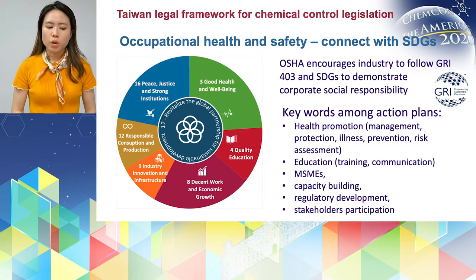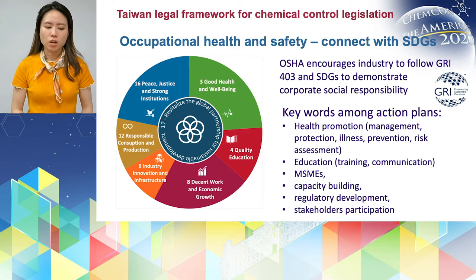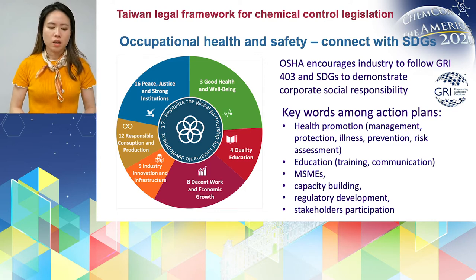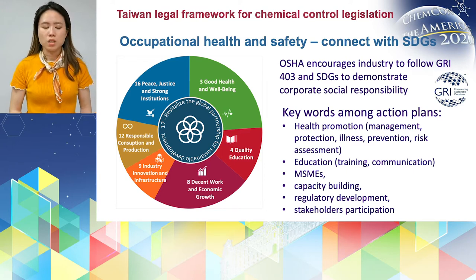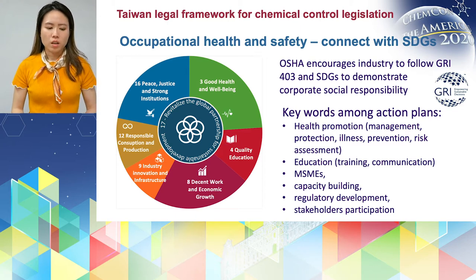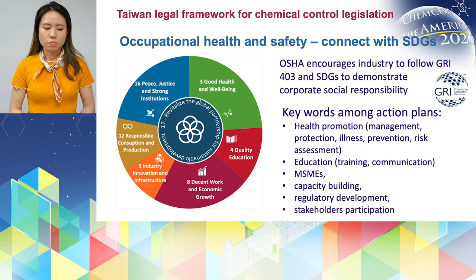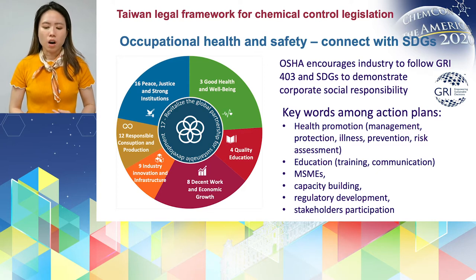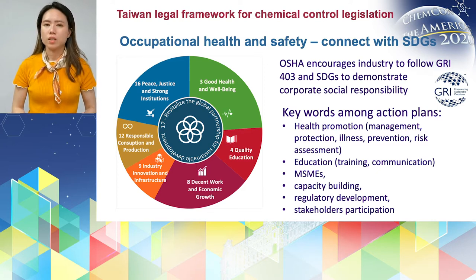Those keywords are: health promotion — including management, protection, illness prevention, and risk assessment; education — including training and communication; micro or small and medium enterprises, which is very specific because in Taiwan more than 98% of MSMEs compose our industry profile; capacity building, which is also very important for MSMEs; and regulatory development and stakeholder participation. These keywords and related action plans will be the 5 to 10 year goals for our Ministry of Labour to connect with SDGs.